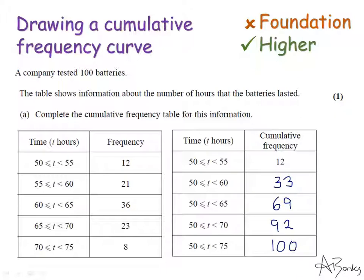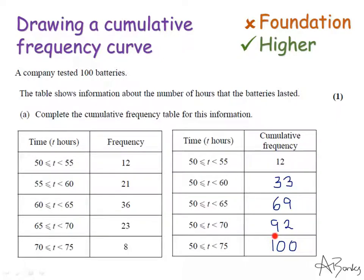Sometimes, but not always, the question tells you how many frequencies you have in total. In this question it says a company tested 100 batteries, and my final cumulative frequency number is 100. So I've probably done this right — I could go back and double check, but if the last number matches, I've probably not made a mistake. So that's the first step.